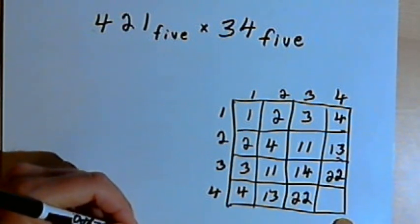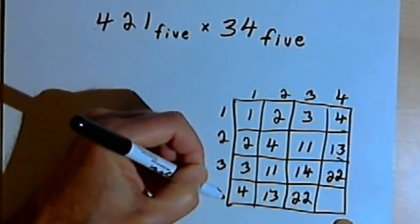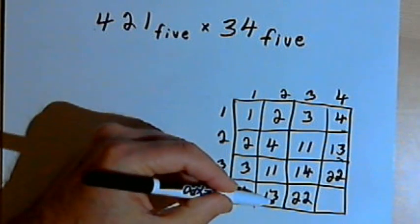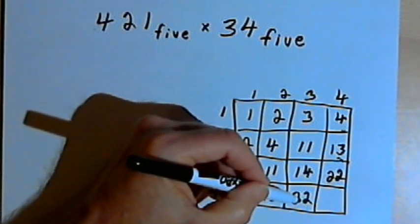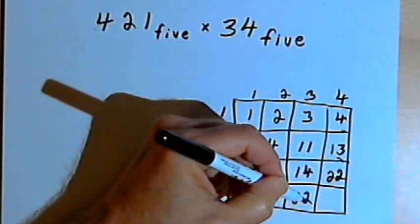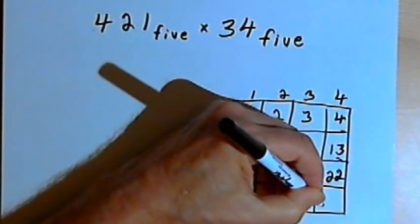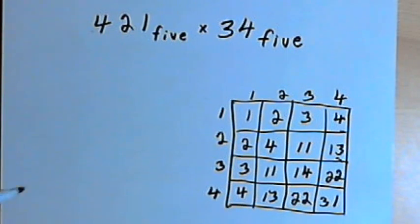And now I've just got one more box left. So in the fourth row, I'm counting by 4s. I've got 4, 13, 22. And then after 22, I'll have 23, 24, 30, 31.